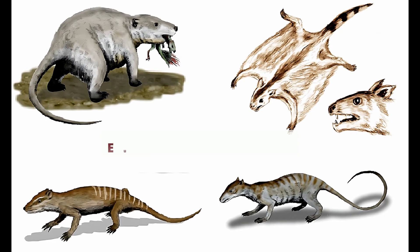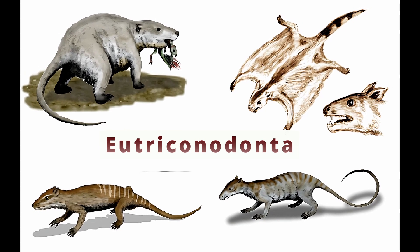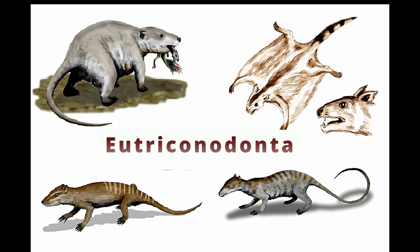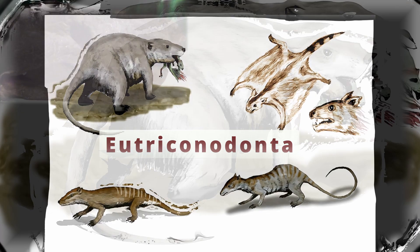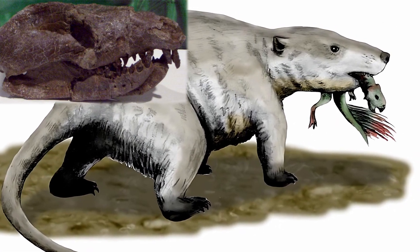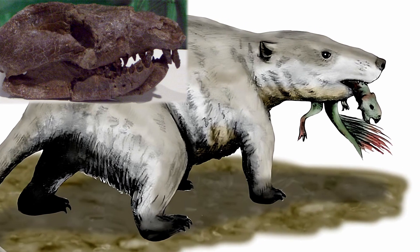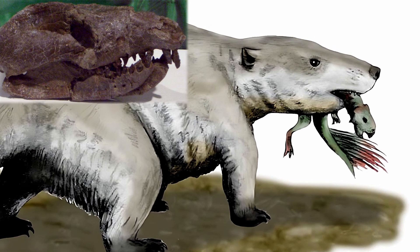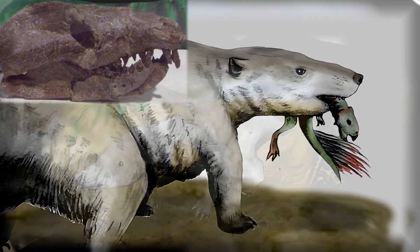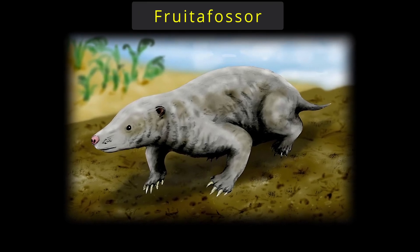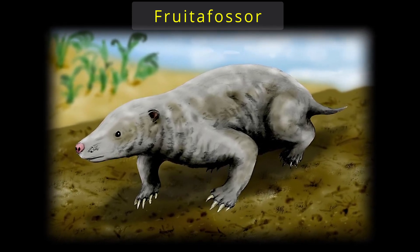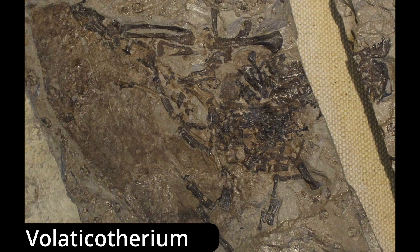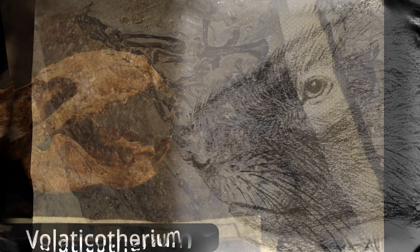The mammalian order of Eutriconodonta first appears in the early Jurassic, and they would reach their peak diversity in the early Cretaceous. Eutriconodonta comprises those members of Triconodonta that form a natural group or clade. Triconodonts more broadly are characterized by their distinctive three-cusped teeth. Eutriconodonts had a range of species occupying a variety of ecological niches, though they were mostly carnivores. Some notable Eutriconodonts of the Jurassic were Amphilestes of the middle Jurassic, and Frutifossor, Cuneodon, and Triconolestes of the late Jurassic.